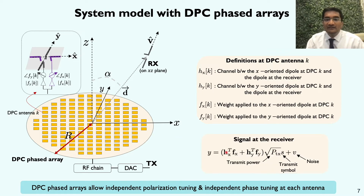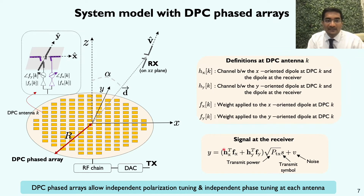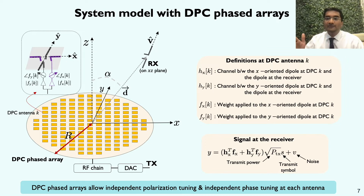When we model all the weights in vectors fx and fy associated with the two polarizations, the received signal is Hx^T fx + Hy^T fy times the scaled transmitted symbol plus noise. Here, Hx is the channel vector containing channel coefficients between all x-oriented dipoles and the receiver, and Hy represents the channel between the y-oriented dipoles and the receiver.